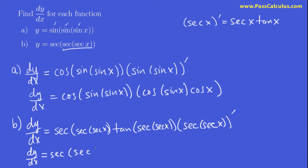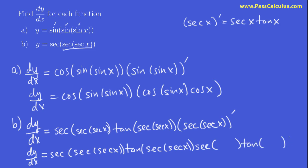Unfortunately, I have to recopy all this. Bear with me. The derivative of this now — we have secant of something, so the derivative of that is going to be secant of that something times tangent of that thing, times the derivative of that thing. And what is that thing? It's secant. And now we have to do the derivative of secant in here. I don't really want to write everything out again, so I'll put the derivative in right away. The derivative of secant is secant times tangent.